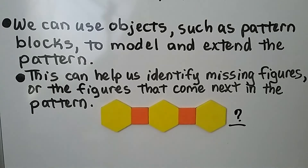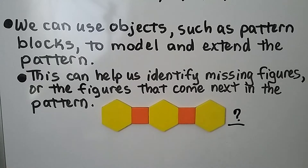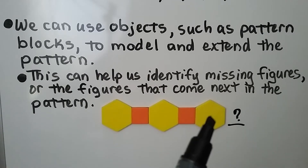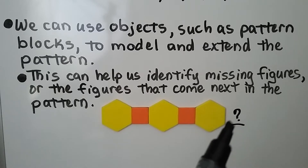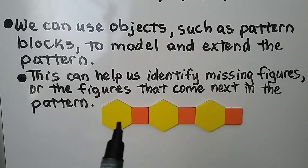We can use objects such as pattern blocks to model and extend a pattern. This helps us identify missing figures or the figures that come next. We have a yellow hexagon, an orange square, a yellow hexagon, an orange square, a yellow hexagon — the next piece is an orange square. The order of these pattern blocks helped us predict what comes next.